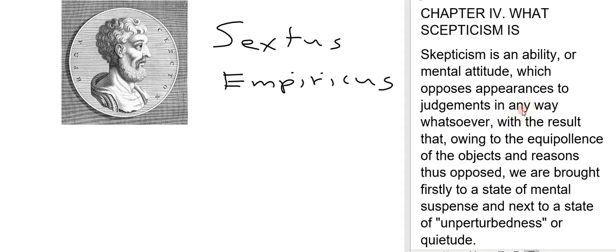So the writings from Sextus here start out with these claims. He's asking what is skepticism in the first excerpt from your reading and so I'll read it out loud. Skepticism is an ability or mental attitude which opposes appearances to judgments in any way whatsoever with the result that owing to the equipolence of the objects and reasons thus opposed we are brought firstly to a state of mental suspense and next to a state of unperturbedness or quietude.